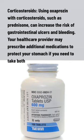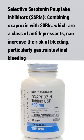Corticosteroids: Using oxaprozin with corticosteroids such as prednisone can increase the risk of gastrointestinal ulcers and bleeding. Your healthcare provider may prescribe additional medications to protect your stomach if you need to take both. SSRIs: Combining oxaprozin with SSRIs, which are a class of antidepressants, can increase the risk of bleeding, particularly gastrointestinal bleeding.